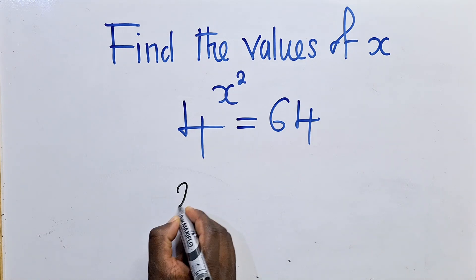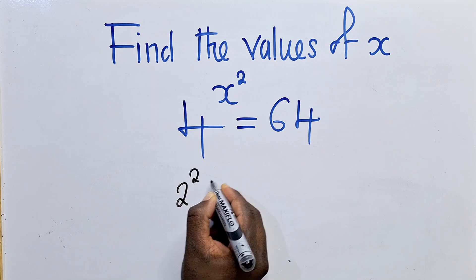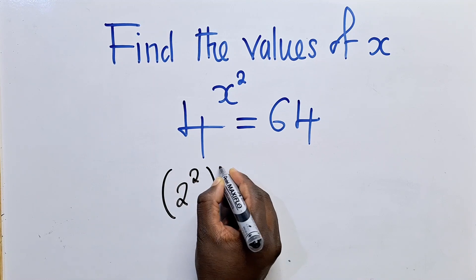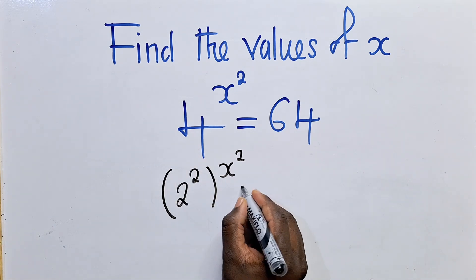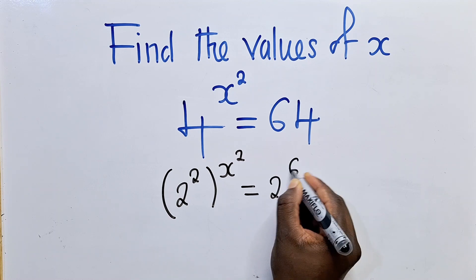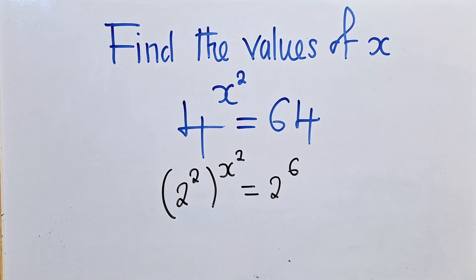We're going to write a 2 power 2 and x power 2 right here. So 2 power 2 would definitely give us a 4, which is equal to a 2 power 6. So you can see 2 power 6 will give us a 64.